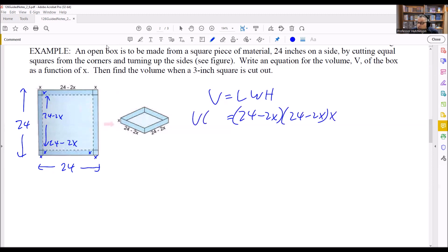Now I can actually turn this into a function because I'm using the correct function notation now, V of x. And we can clean this up a little bit here. We can do, this is going to be x here and then I have 24 minus 2x.